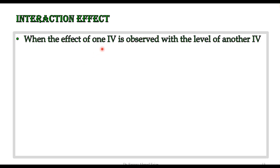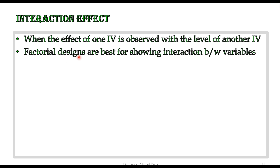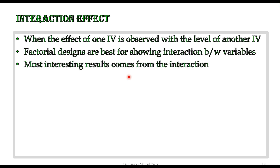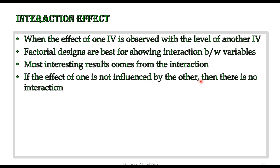Let's understand the interaction effect — when the effect of one independent variable (IV) is observed with the level of another IV. We consider one factor with another factor and observe the effect of one IV on the level of another IV. Factorial designs are unique and best for showing interaction between variables. Most interesting results come from this interaction. If the effect of one IV is not influenced by the other variable, there is no interaction, but if it is influenced, then there is interaction.